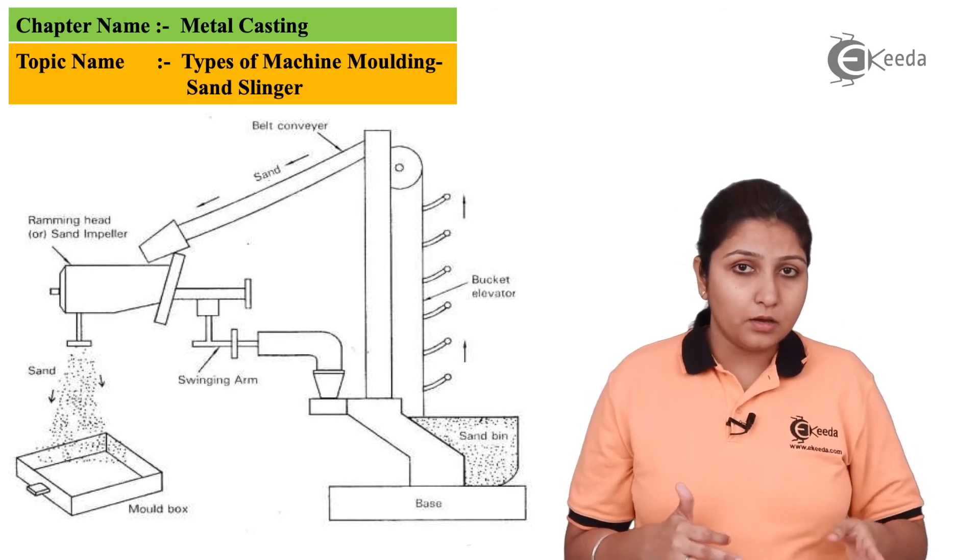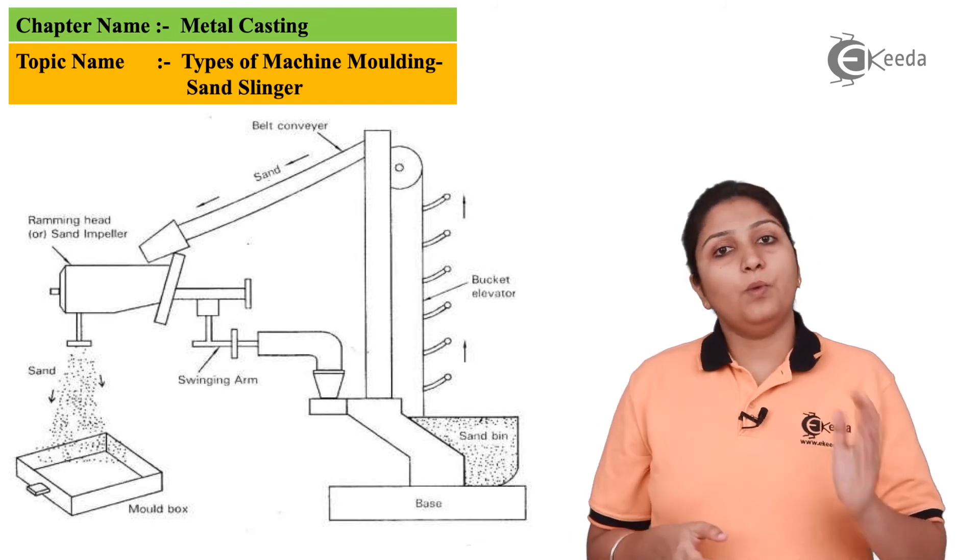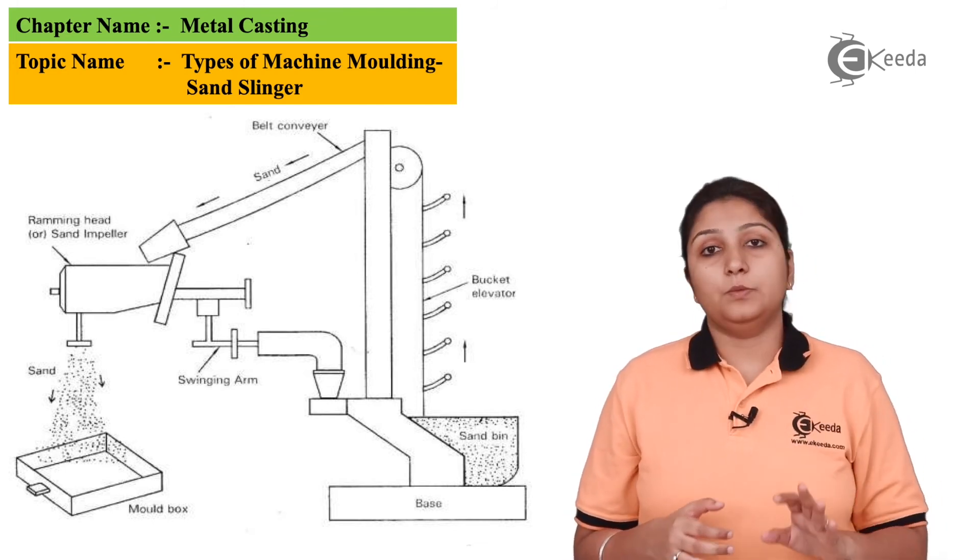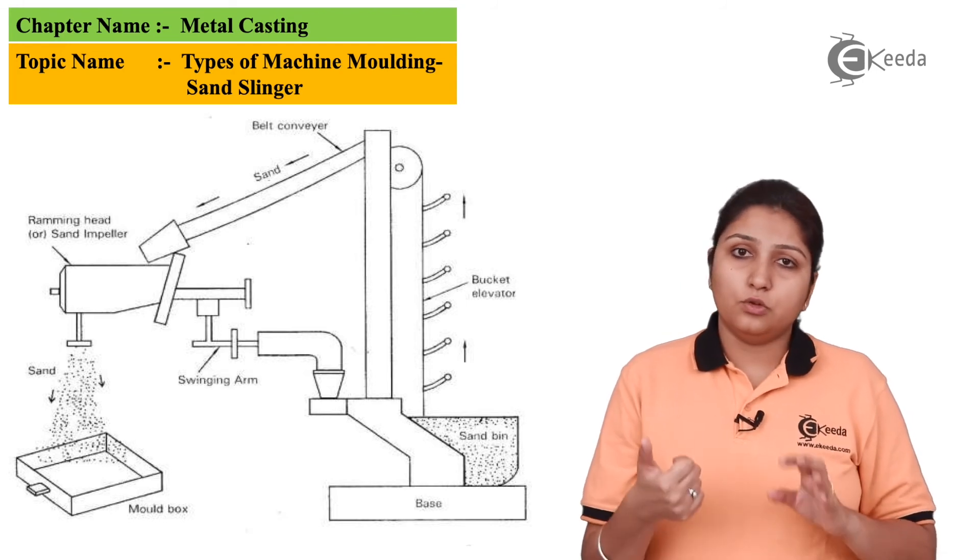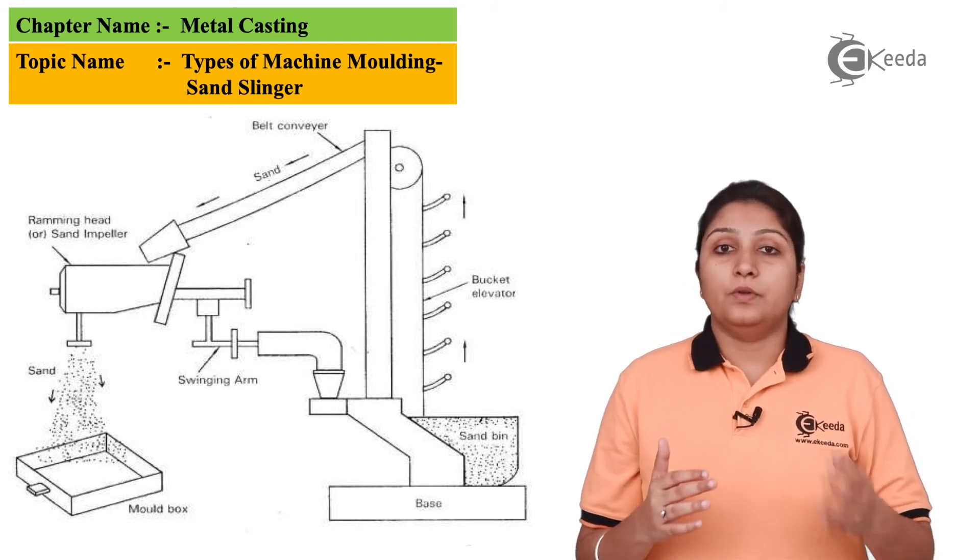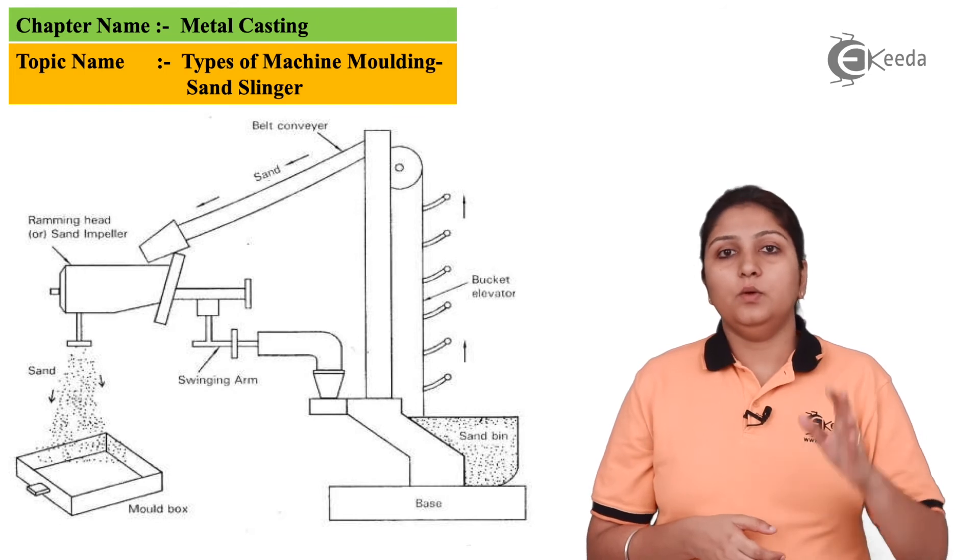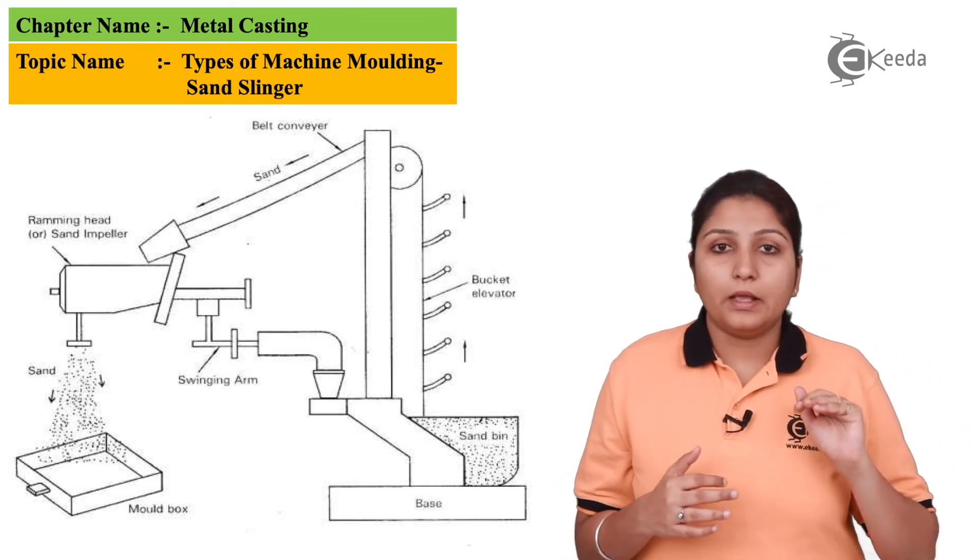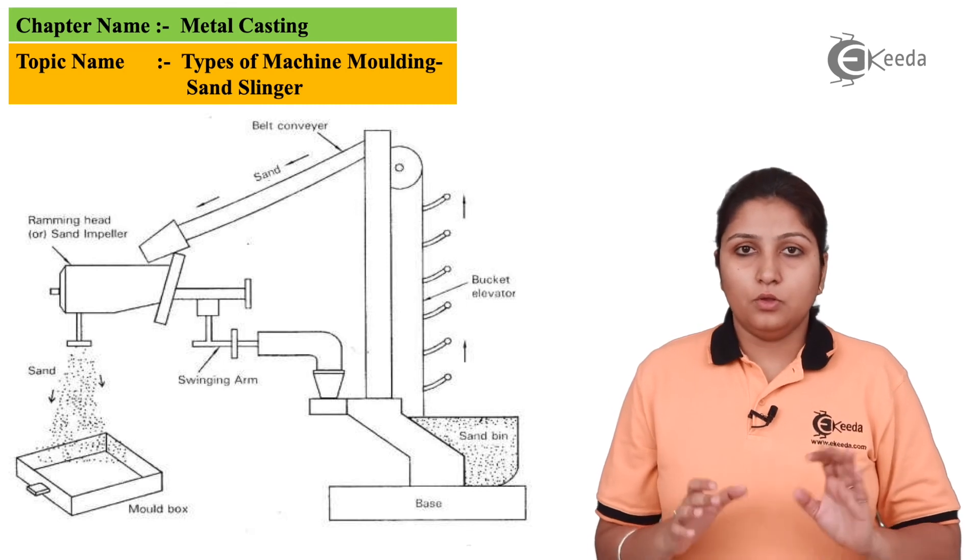What you can see is that the impeller is attached with a swing and the impeller is vibrated at a very high speed. It is vibrated at the conveyor also, but at the impeller the speed increases more. Finally, your sand comes and settles down at your exact mold pattern.